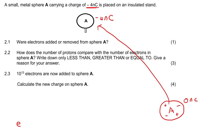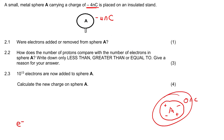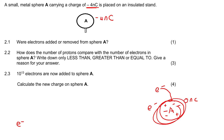Remember that electrons are negative. So if you wanted to make this object more negative, you would add more electrons, because adding electrons makes the whole object become more negative. So, were electrons added or removed? For one mark, we're just going to say electrons were added.